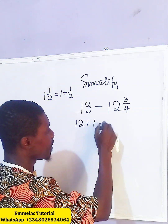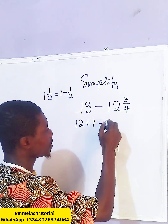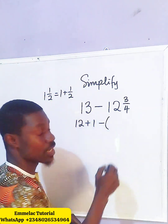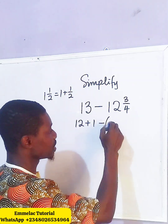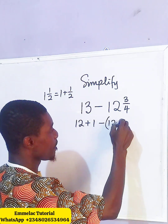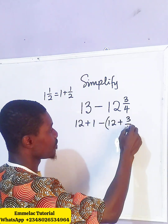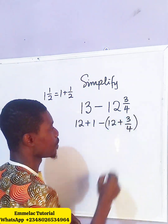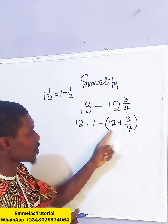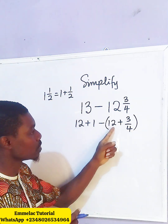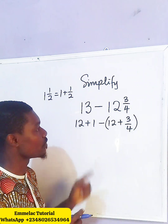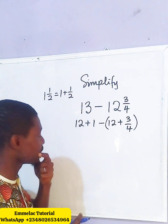So this would be minus, and because we are splitting, we add parentheses: 12 plus 3 over 4. The reason for doing this is for us to have a common 12, so that we can get 12 from this part.